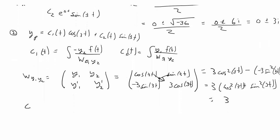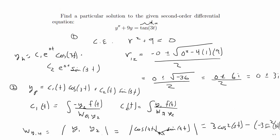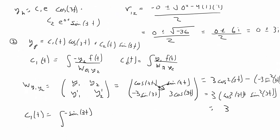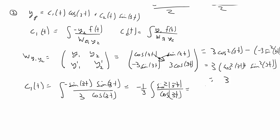Now we plug in and solve for c1(t). That's the integral of negative y2·f(t) over 3, so: negative sin(3t) times tangent(3t) — which is sin(3t)/cos(3t) — all over 3. This simplifies to negative one-third times the integral of sin²(3t)/cos(3t). We rewrite sin²(3t) as 1 − cos²(3t), giving negative one-third times the integral of (1 − cos²(3t))/cos(3t).